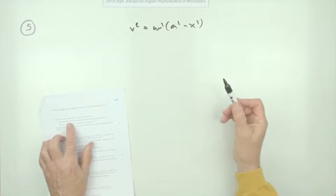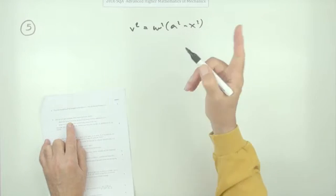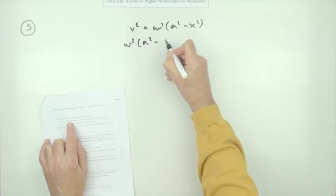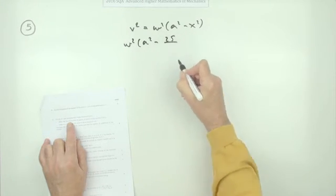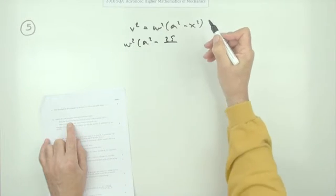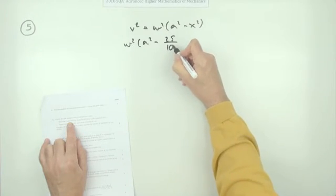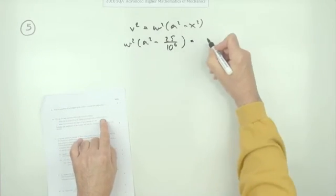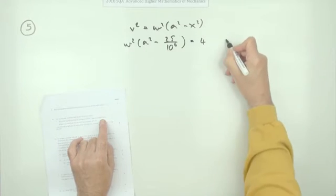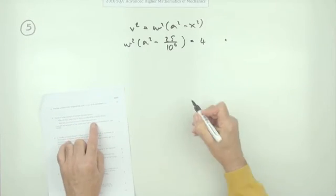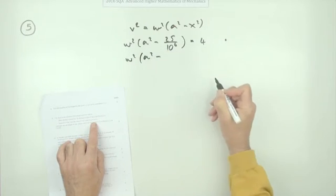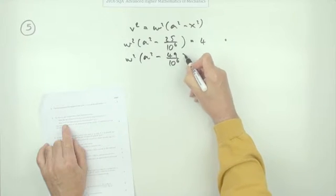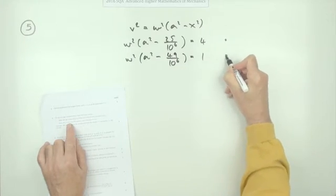Setting up the simultaneous equations: when the displacement is 5 mm, ω²(a² − 25/10⁶) = 4, since v = 2 m/s and x = 5 mm = 5×10⁻³ m. That's equation 1. When x = 7 mm, ω²(a² − 49/10⁶) = 1, since v = 1 m/s. That's equation 2. Two marks just for substituting into the formula.